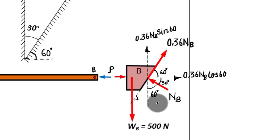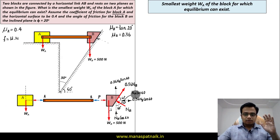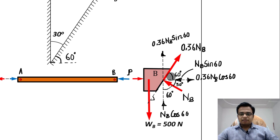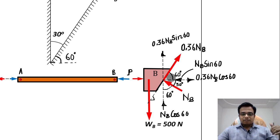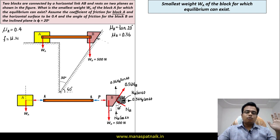For the normal force N_B, we similarly resolve it: the horizontal component is N_B sin60° (towards the left) and the vertical component is N_B cos60° (upwards). To summarize: the component of 0.36 N_B is 0.36 N_B cos60° towards the right and 0.36 N_B sin60° upwards. The components of N_B are N_B sin60° towards the left and N_B cos60° upwards.